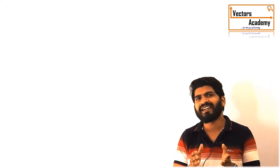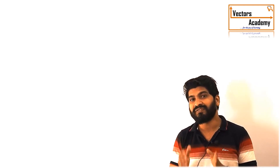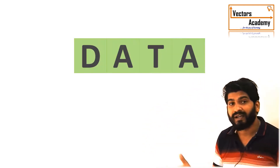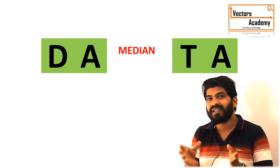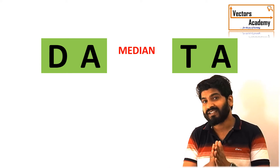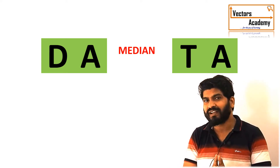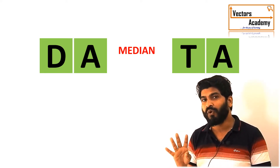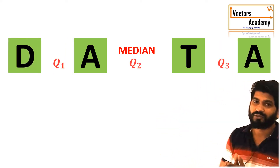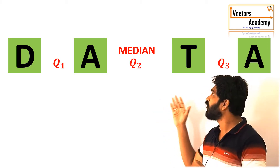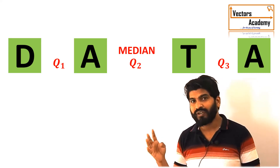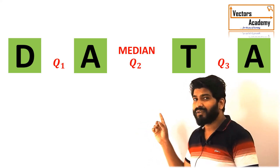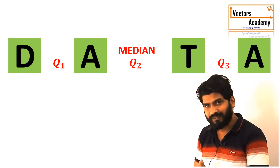Now what is exactly the median? Median is the value which divides the data into two equal halves. So a quartile — quarter means one fourth — so the quartiles are the values which divide the data into four equal parts. There are three quartiles Q1, Q2, and Q3 which are used to divide the data into four equal parts. The second quartile is in fact the median itself.